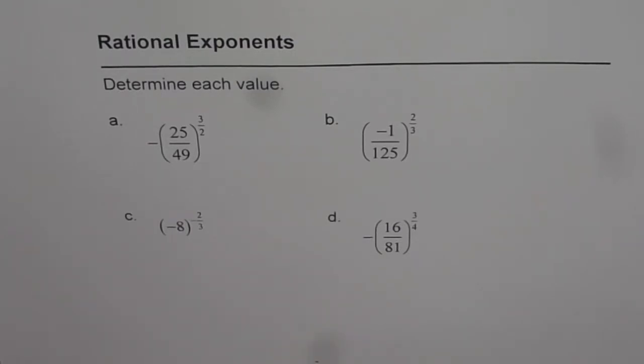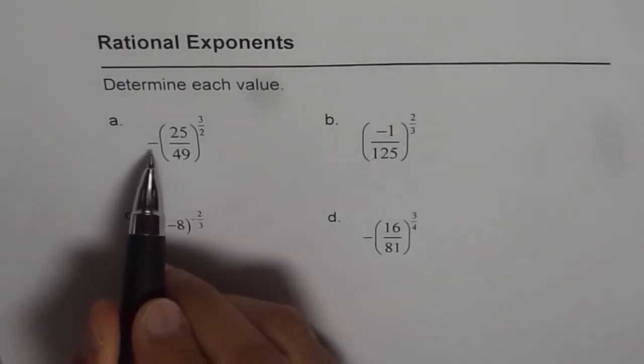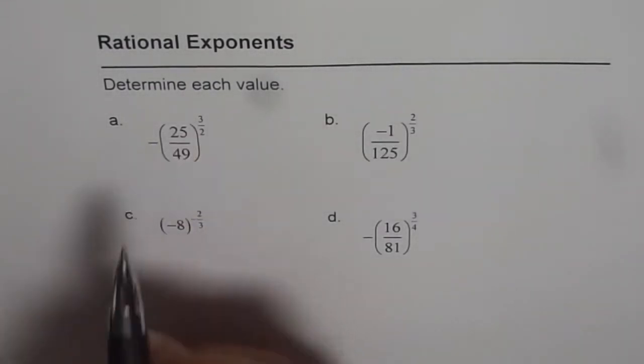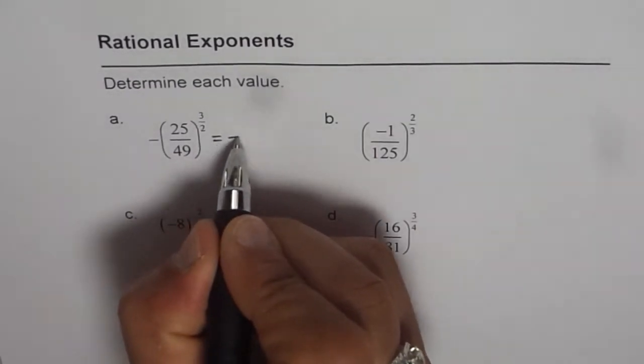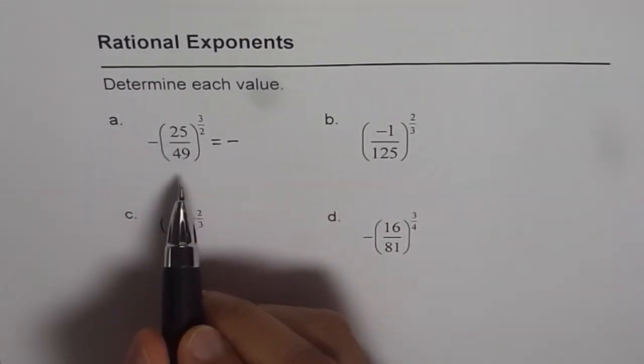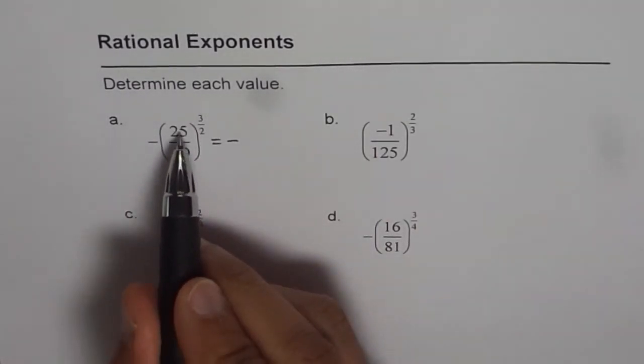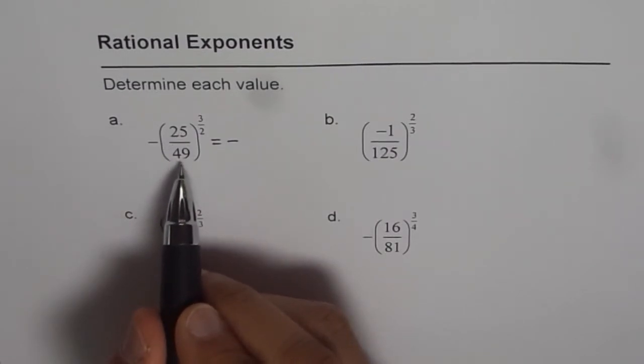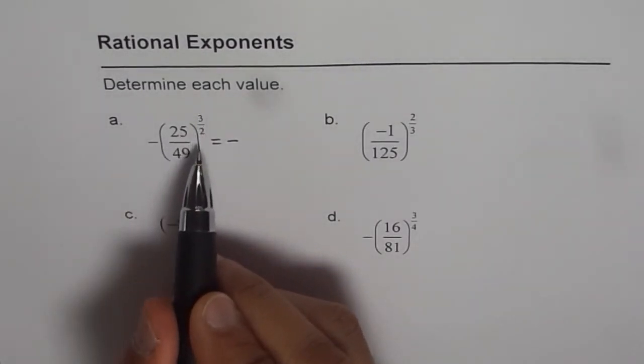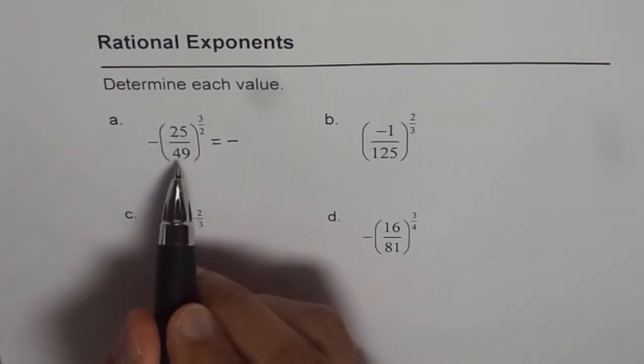So let us do the first one, part A. Negative is outside the exponent, so therefore the answer will be negative. And within the bracket we have 25 over 49, the exponent is 3 over 2. It is our choice what to do first. It is better to do square root first. So we will do square root of these numbers.